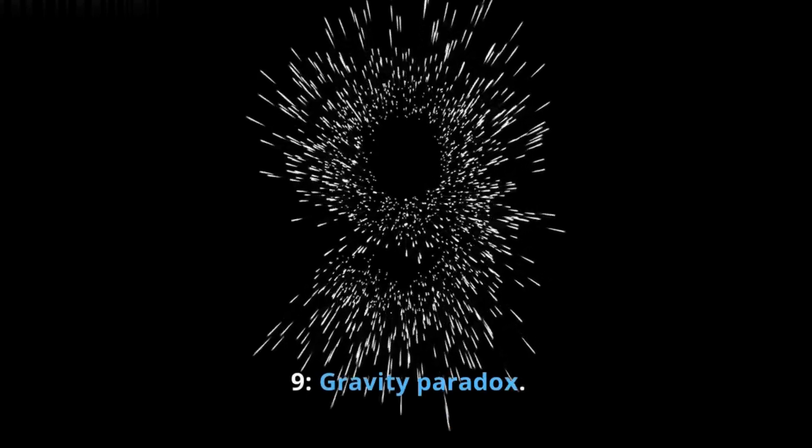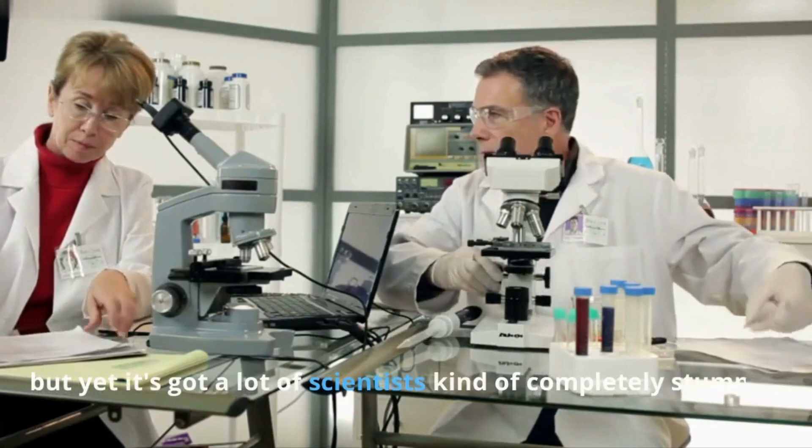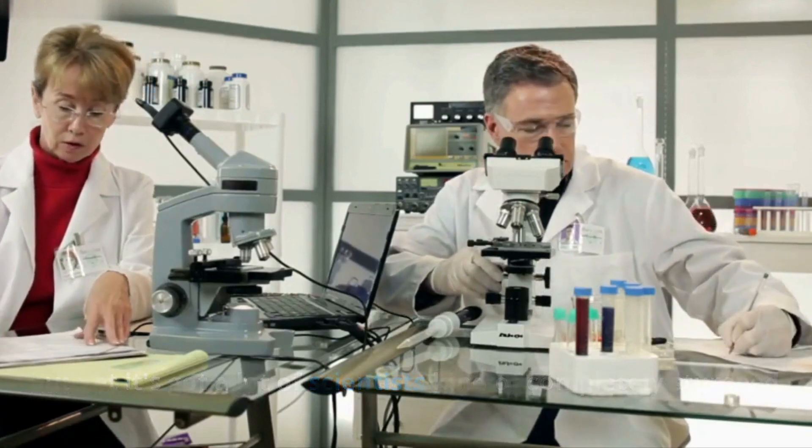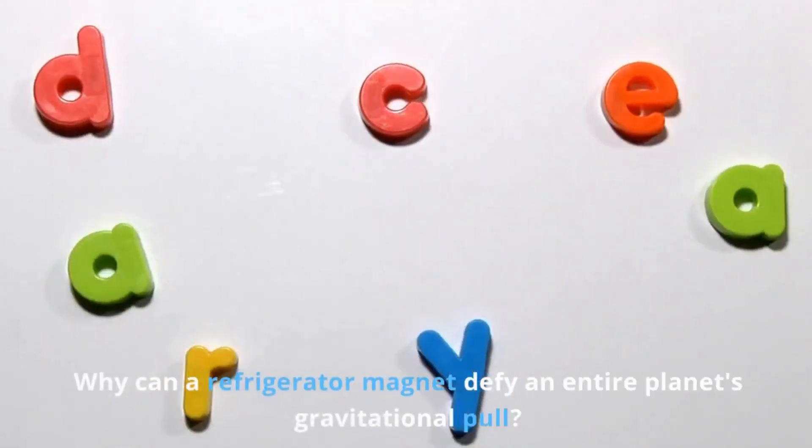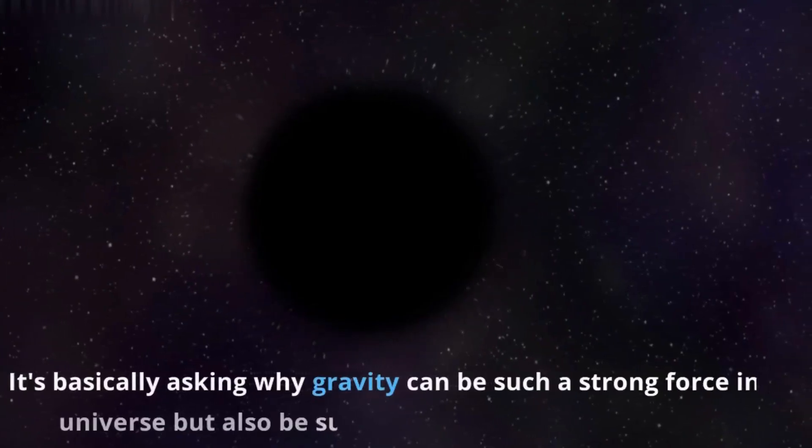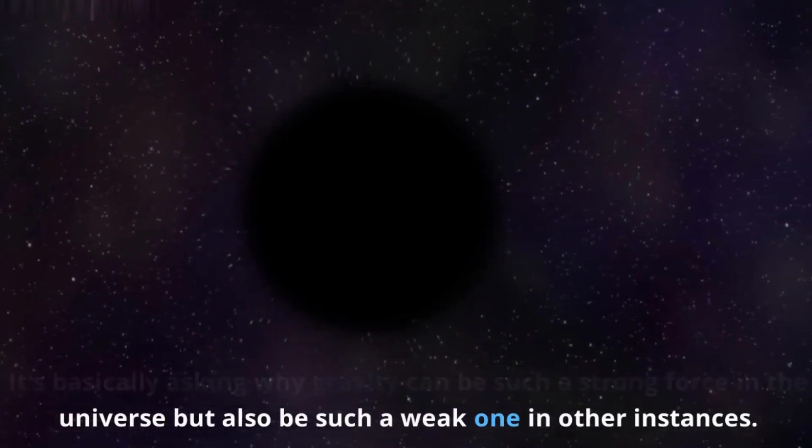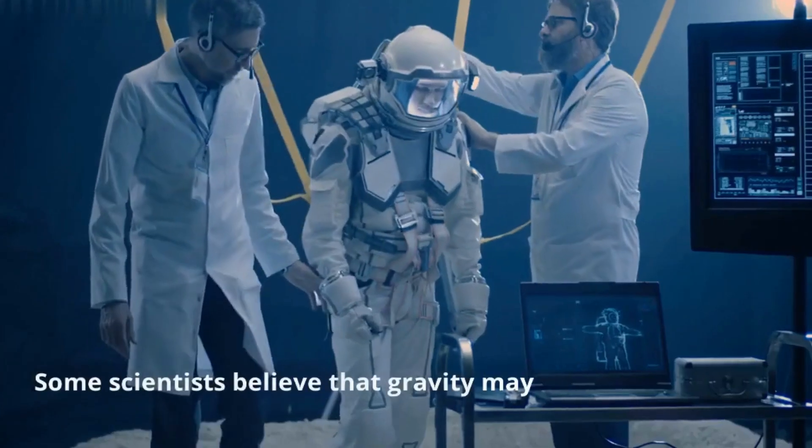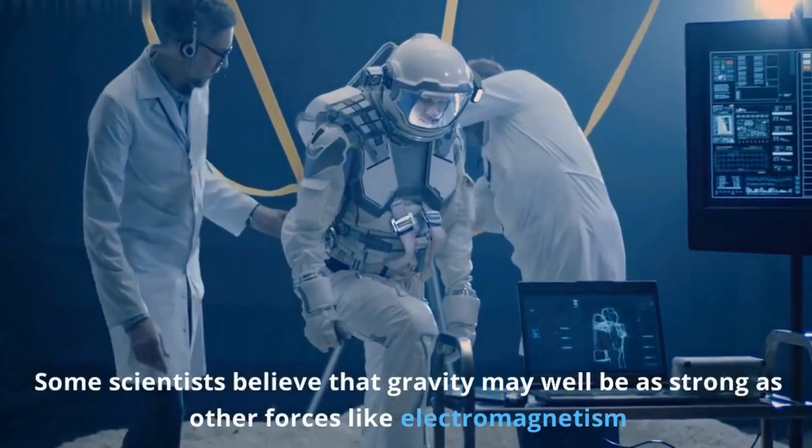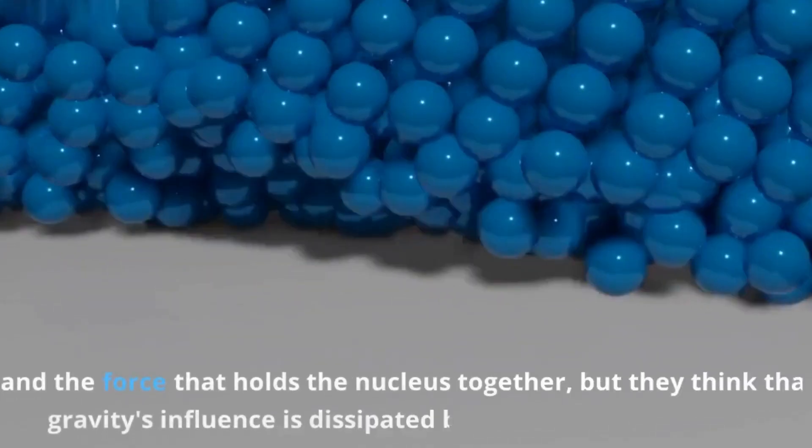Number 9. Gravity Paradox. This question is a pretty simple one, but yet it's got a lot of scientists completely stumped. Why can a refrigerator magnet defy an entire planet's gravitational pull? It's basically asking why gravity can be such a strong force in the universe but also be such a weak one in other instances. Some scientists believe that gravity may well be as strong as other forces like electromagnetism and the force that holds the nucleus together.